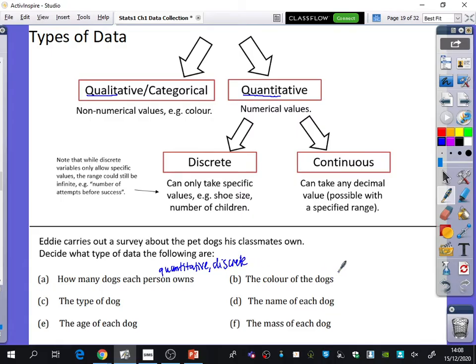B says the color of the dogs, which is qualitative because it's being measured with words. The type of dog? Qualitative. Forgive me for this being incredibly boring. The name of each dog? No, because it's not a numerical value. Unless you've decided to name your dog 13 or 18 or something. It's qualitative.